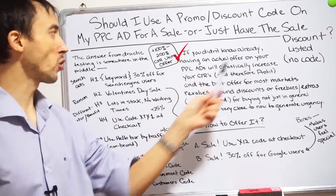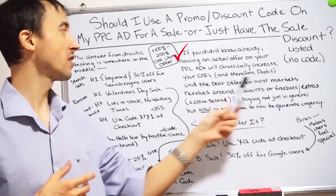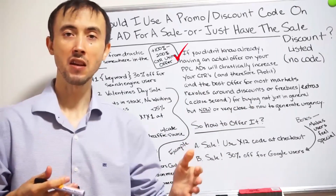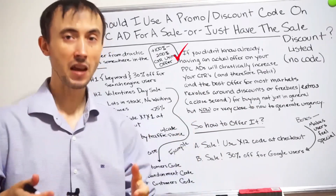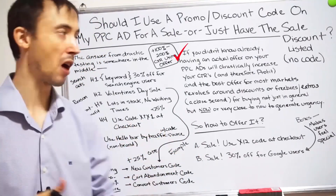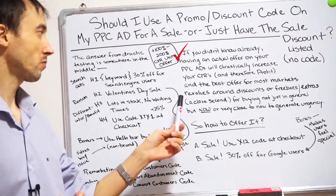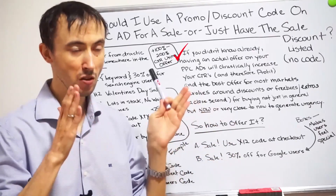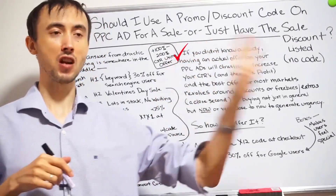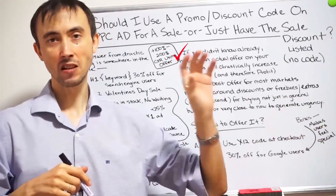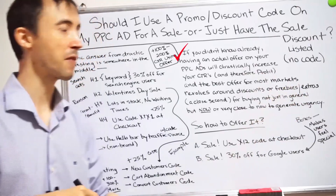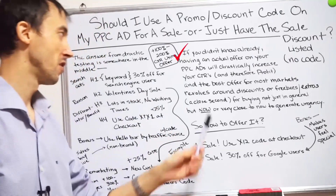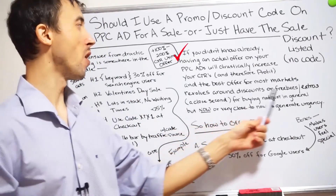Having an actual offer on your PPC ads will drastically increase the click-through rate. Higher click-through rates mean more profit from your campaign — more sales on the same ad budget. You need to have a quote-unquote offer on your PPC campaign. You're not just selling pencils; you're offering pencils at a discount, or two-for-one — whatever gets you more results.